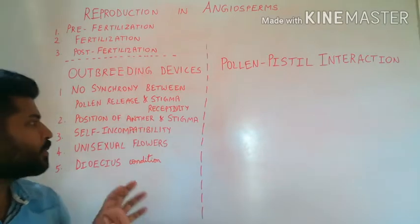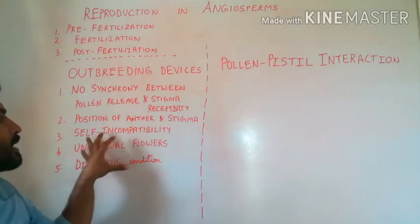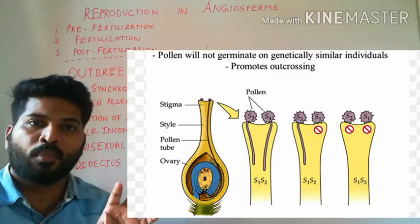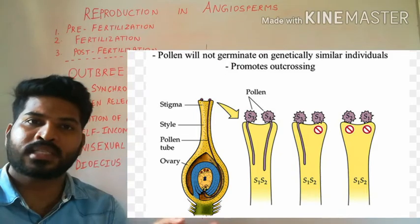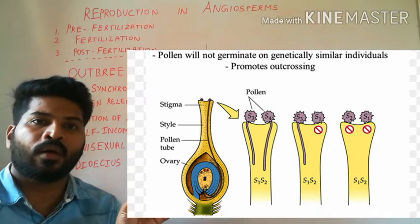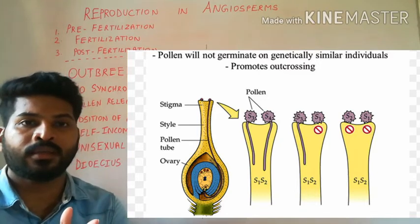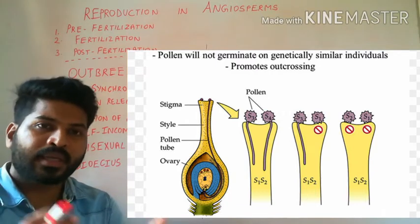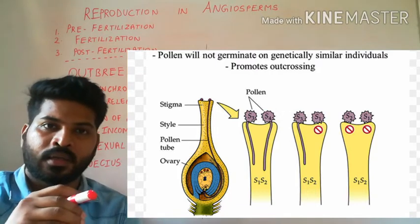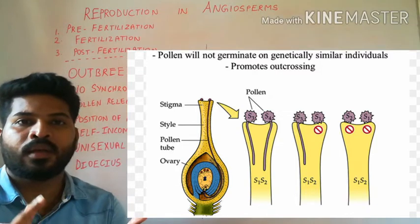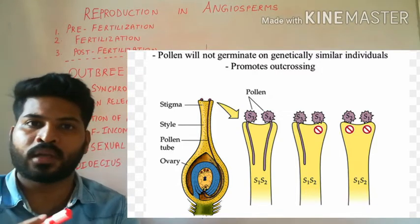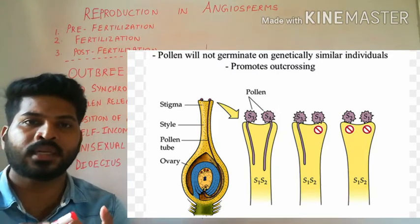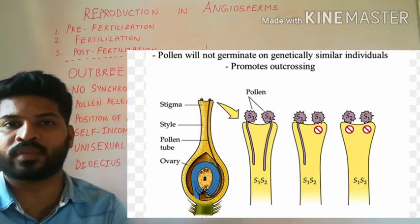Genetically, some plants have a mechanism called self-incompatibility. This means if the pollen grain falls on the same flower or on flowers of the same plant, they will be incompatible. When the pollen grain lands on the stigma, pollen germination will not take place or pollen tube growth will not take place, hence preventing fertilization of the same flower.